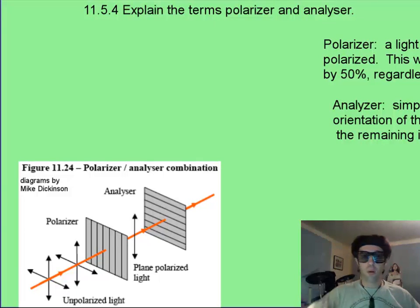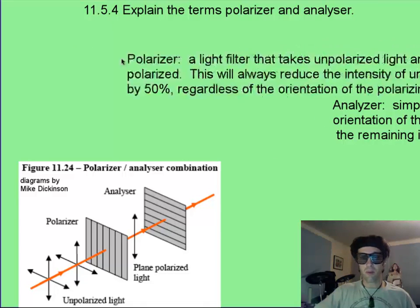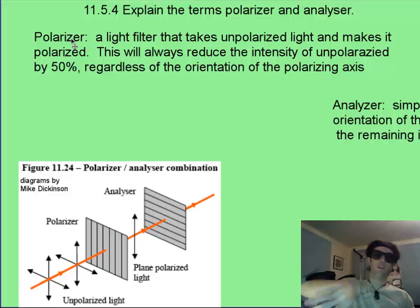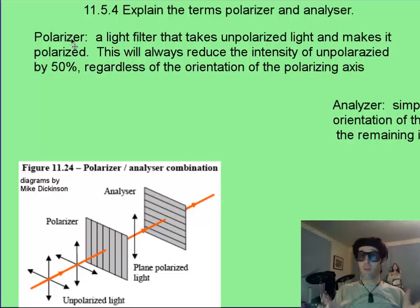So two terms, polarizer and analyzer. There's really no difference between the two, it's just a matter of which polarizing filter you call your polarizer and which one you call your analyzer. The first one that's receiving the unpolarized light, usually people will call the polarizer. And that's going to take stuff that's polarized in every way and make it polarized. And that's always going to reduce your intensity by half and make it 50% as intense.